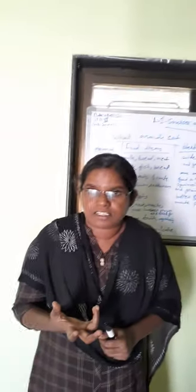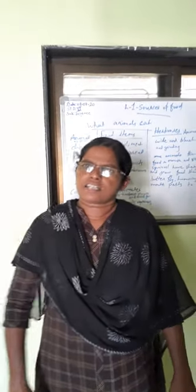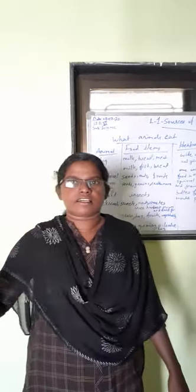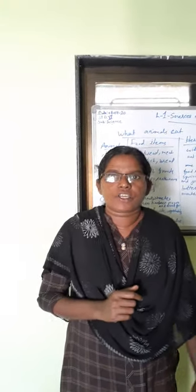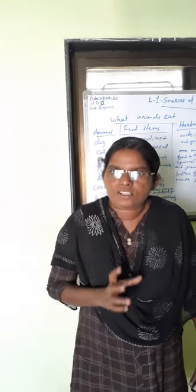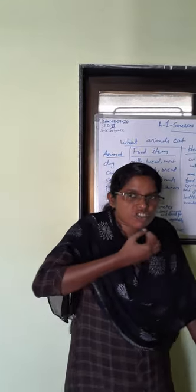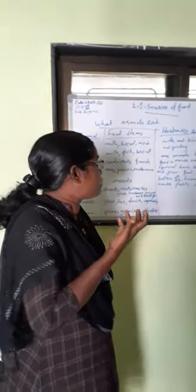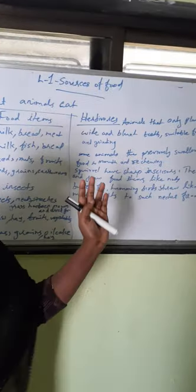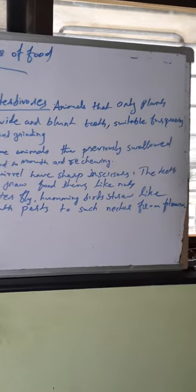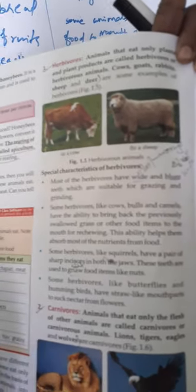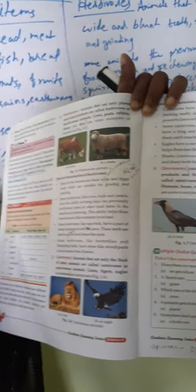Some animals, for example cow and buffalo and goat — you may have noticed that they are always chewing, every time chewing. That food is first swallowed into the stomach. Afterwards, they bring back the previously swallowed food to the mouth and re-chew it. This is the re-chewing method. Cow, bulls, camels bring back the previously swallowed grass or other food items to the mouth for re-chewing. This ability helps absorb nutrients from food.